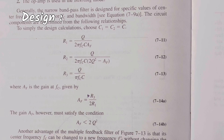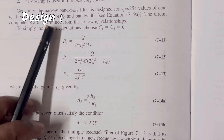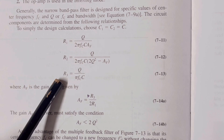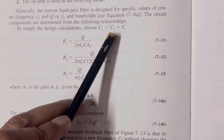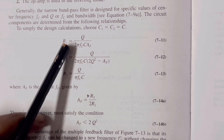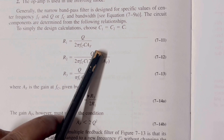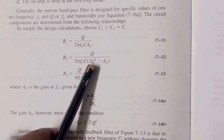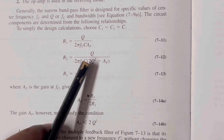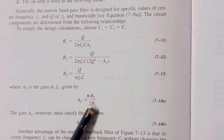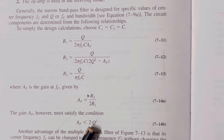Narrow band pass filters are generally designed for specific values of center frequency Fc and Q. We can determine the values of R1, R2, and R3 using design equations, keeping C1 equal to C2 equal to C. R1 equals Q divided by (2π·Fc·C·AF), where AF is gain and Q is quality factor. R2 equals Q divided by (2π·Fc·C·(2Q²−AF)), and R3 equals Q divided by (π·Fc·C). AF is given by R3 divided by 2R1, and AF must satisfy the condition AF less than 2Q².